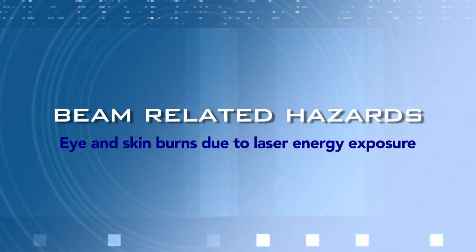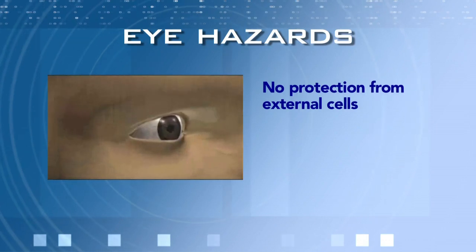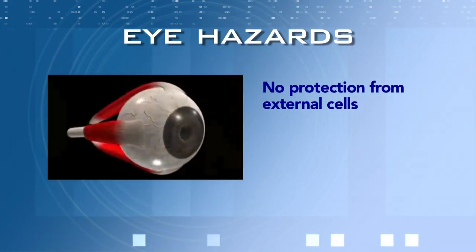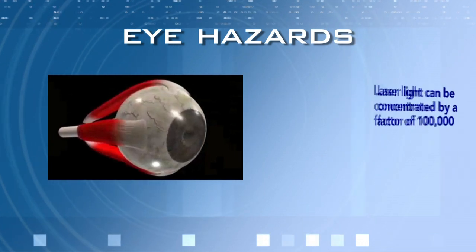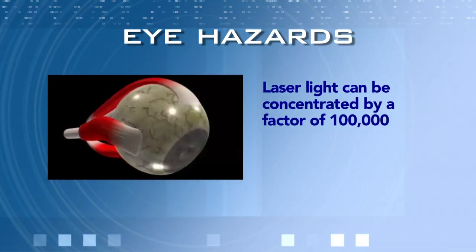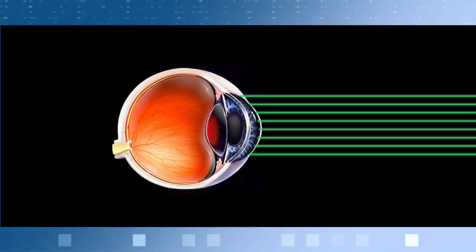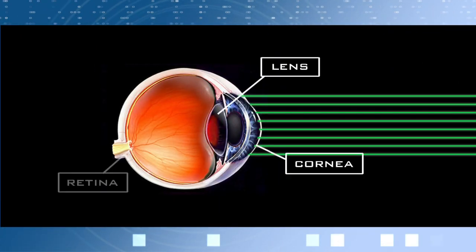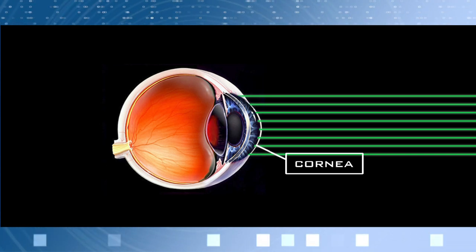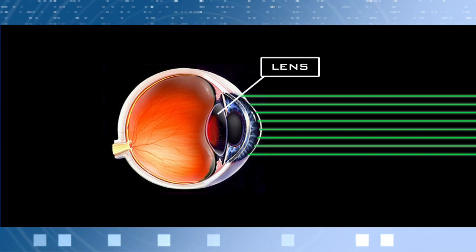Beam-related hazards refer to eye and skin burns due to exposure to laser energy. The human eye is more vulnerable to injury than human skin, since the cornea does not have an external layer of dead cells to protect it, and light entering the eye from a collimated beam can be concentrated by a factor of 100,000 times. The three areas of the eye most susceptible to damage are the cornea, the lens, and the retina. The cornea is a transparent tissue layer covering the eye, and damage to the cornea may be painful but not permanent. The lens focuses light to form images on the retina.